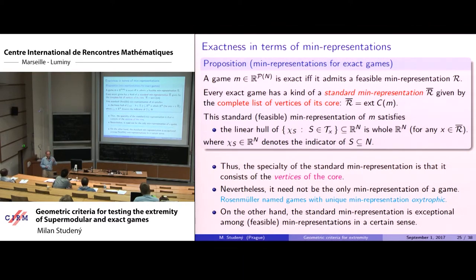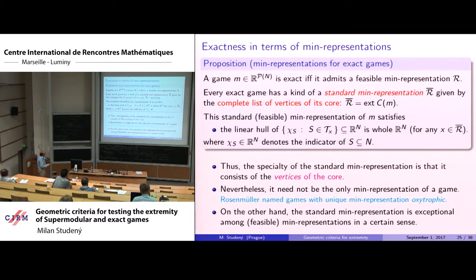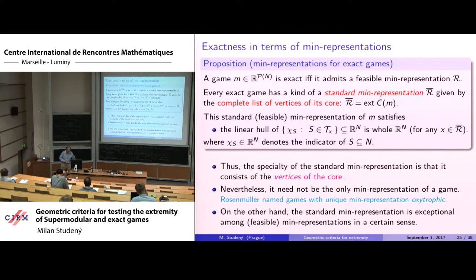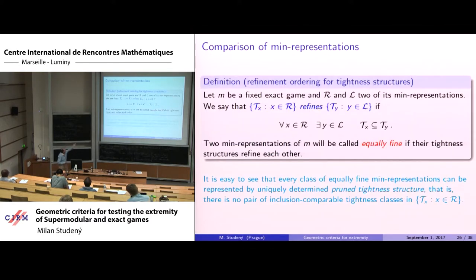A game is exact if and only if it admits a feasible min representation. Every exact game has a standard min representation by the vertices of the core, with the special property that for each vector, the indicators of the tight sets generate the whole space linearly — this characterizes the vertices of the core. There can be other min representations beyond the standard one, but the standard one is exceptional.